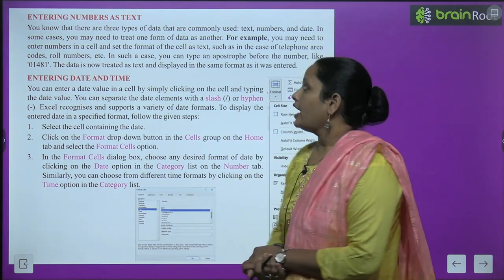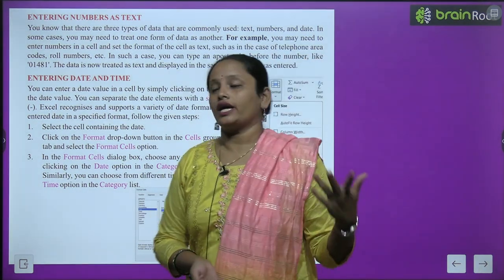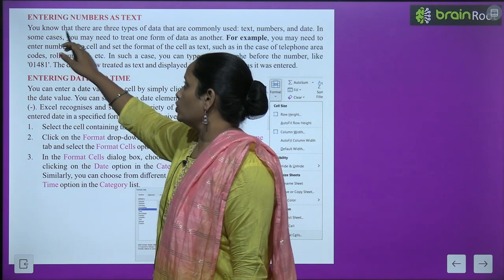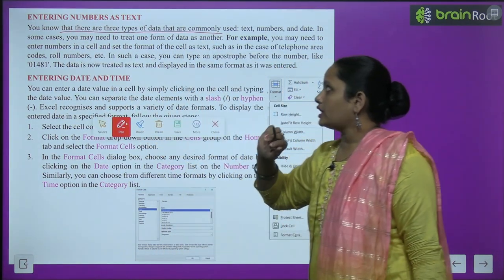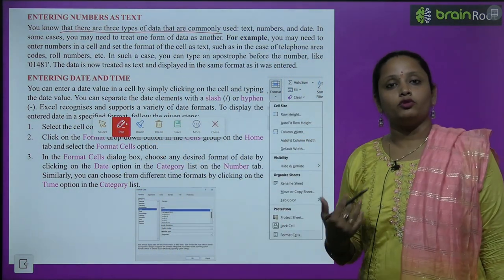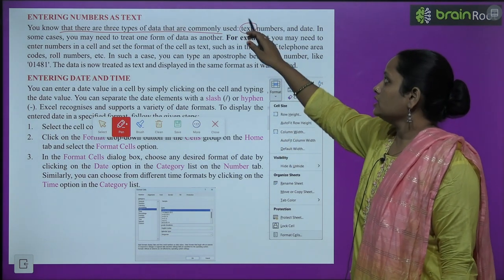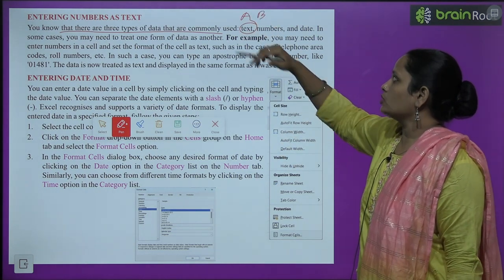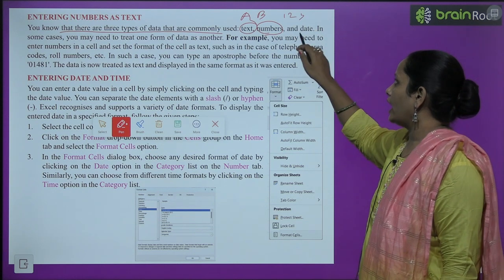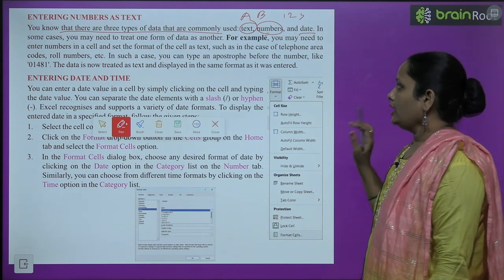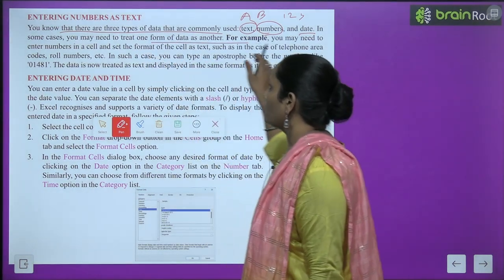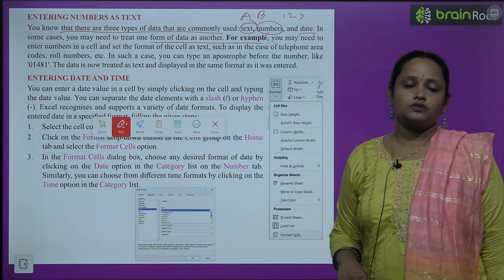Entering number as text: you know that there are three types of data commonly used — text (like ABCD), numbers (like 1, 2, 3, 4), and date. In some cases, you may need to treat one form of data as another — for example, you may need to enter a number in a cell and set the format as text.